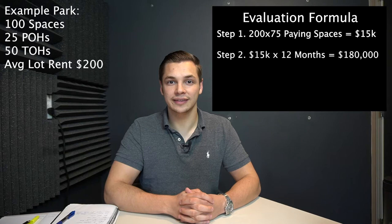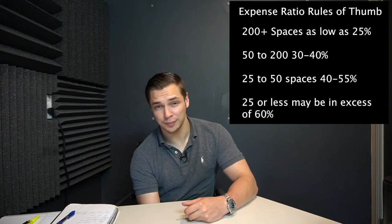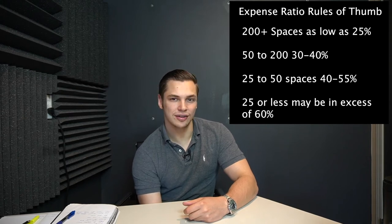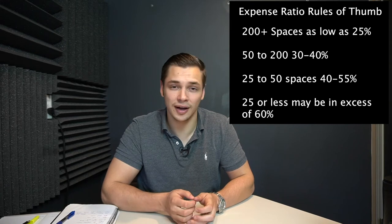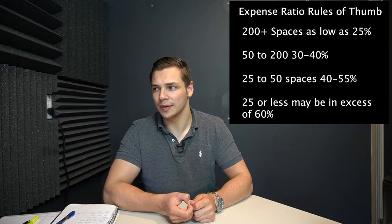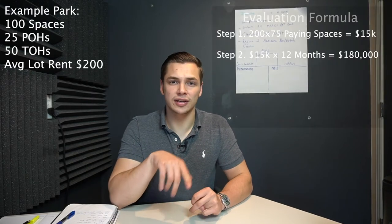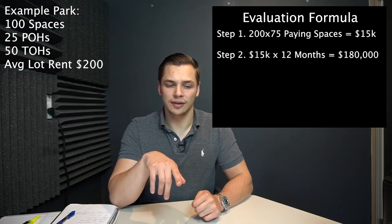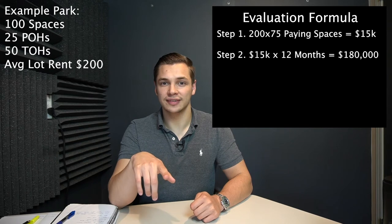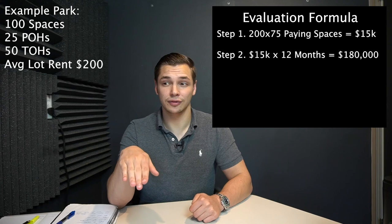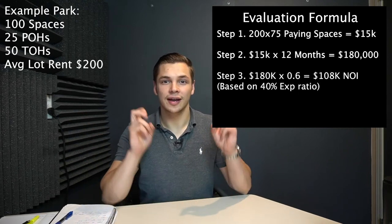Now we're going to take that number and apply an expense ratio. You can pull this number off of the T12, or if you're just doing a quick calculation, for a 100-space park we're probably looking at anywhere from 35 to 50% — I'd probably go with 40 to 45. It really depends on if the park's paying for utilities, who pays what, is it well and septic or city utilities. So if we have 75 spaces paying $200 a month across 12 months, and we apply an expense ratio of 40%, we take the other side of that — 60% — so we multiply our gross potential rent times 0.6 or 60%, and that gives us our effective NOI.